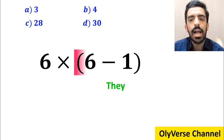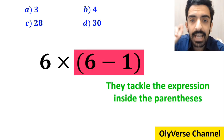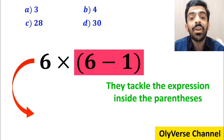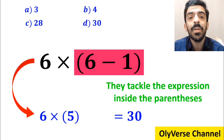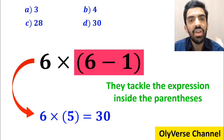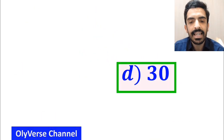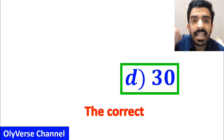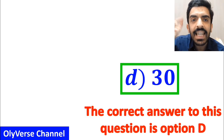In the final step they tackle the expression inside the parenthesis and rewrite it as 6 times 5, which ultimately gives them the answer 30. Then without any hesitation they quickly say that the correct answer to this question is option D.